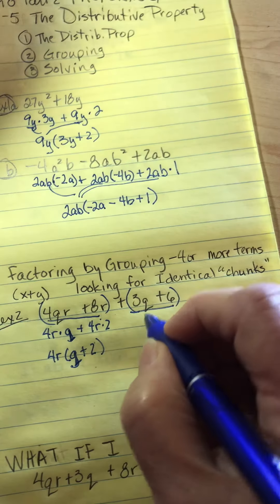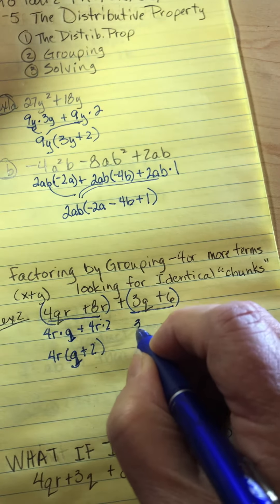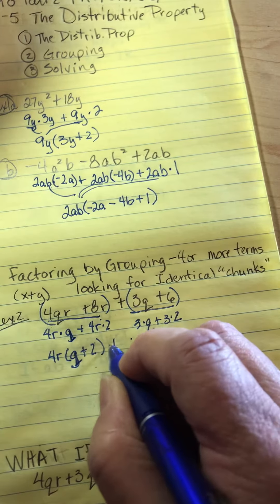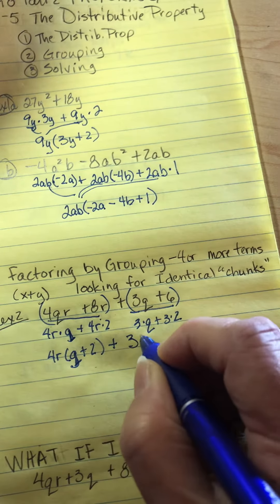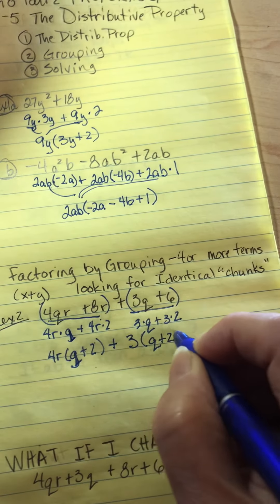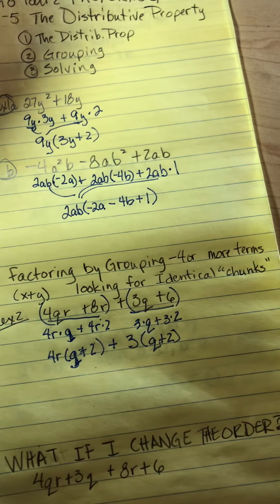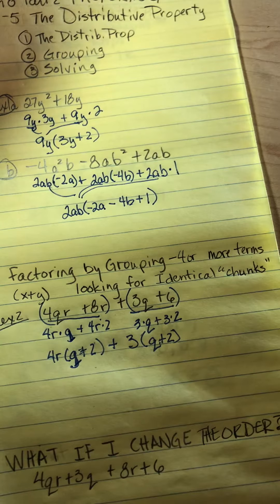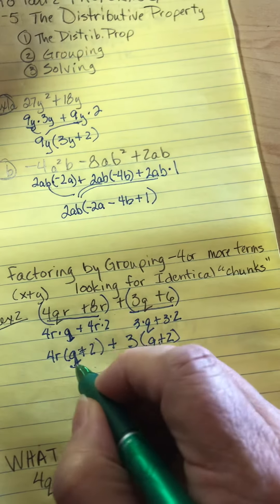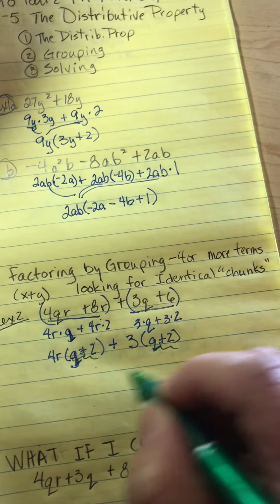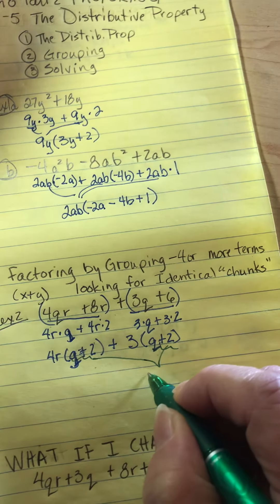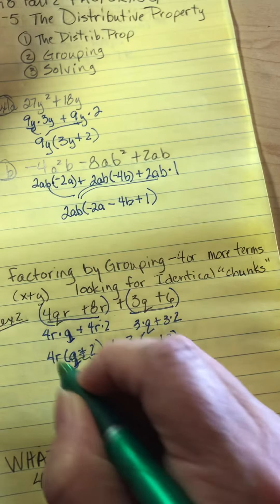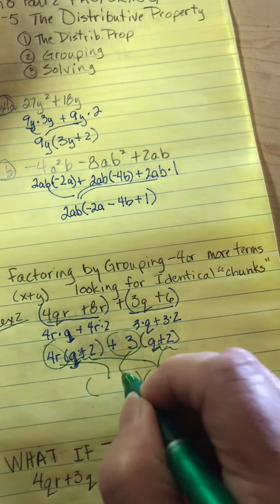On this one, all I'm going to pull out is a 3. I've got 3 times Q plus 3 times 2, and I'm going to have plus 3 times Q plus 2. My chunk has to be identical. Has to, has to, has to. And then you're probably looking at that and saying, what do I do with that now? This is your new GCF and you've got to pull it out. So I'm going to have Q plus 2, and look at what's left: 4R plus 3. That goes in here.